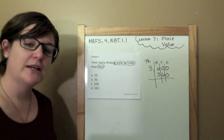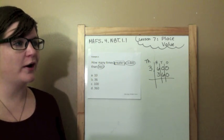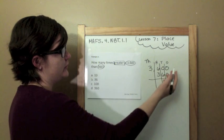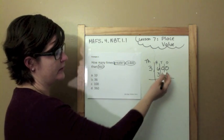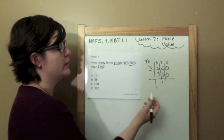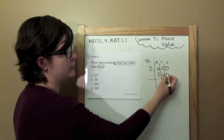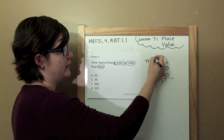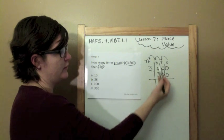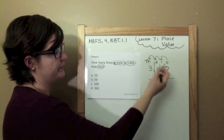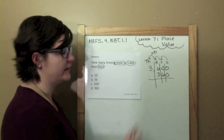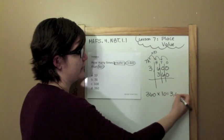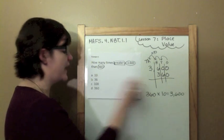So now I have my places. We're seeing how many times greater it is. I've got the same digits: three, six, zero, zero, and then three, six, zero. Each number hops over — this zero hops over, this six hops over, and this three hops over to the next place value. Each time I hop, I'm multiplying by 10. So 360 times 10 equals 3,600. This number is 10 times greater.